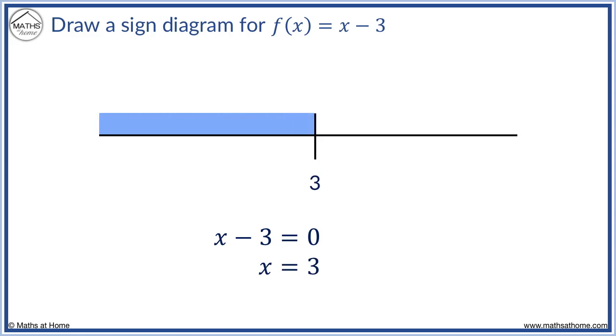We now look at values of x less than 3 and see whether they give us a positive or negative result when input into the function. We take the function x minus 3 and substitute any value of x less than 3. We can take 2, 1, minus 10 or any number less than 3. We will choose 0 because it is easy to substitute in. 0 take away 3 equals minus 3 which is negative. We mark a negative sign on our sine diagram. This means any value less than 3 substituted into the function will give us a negative answer.